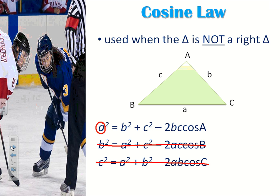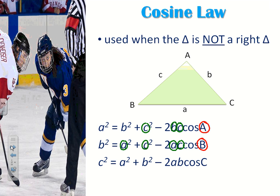Whatever is at the front is also at the back — I'm just giving you tips on how to remember this formula. Whatever is in the middle, these two, are the other letters that are not A, so the other two letters. You'll notice that if I'm looking for B, B will also be at the back, and the two other letters, A and C, will be the ones in the middle. All three of the formulas are exactly the same — it just switches up depending on which letter you're looking for.